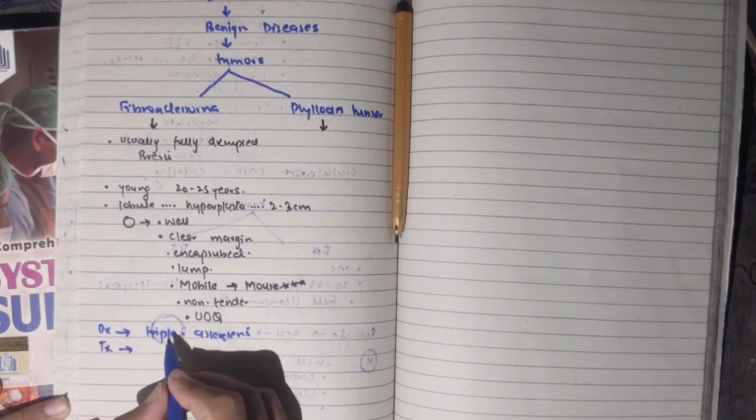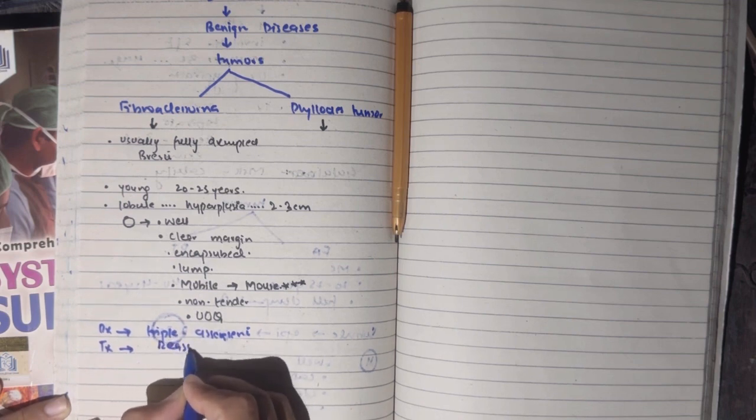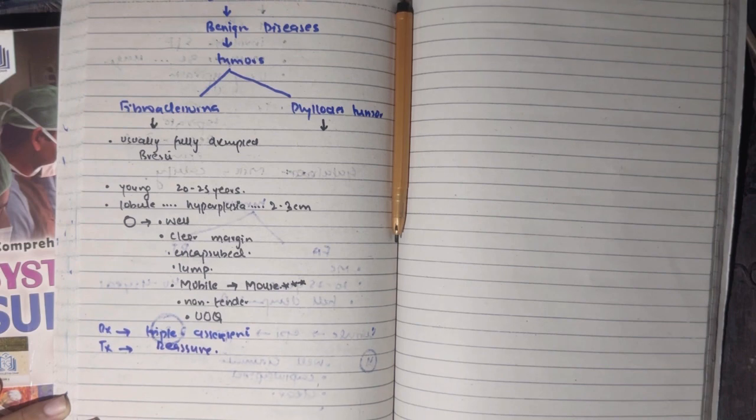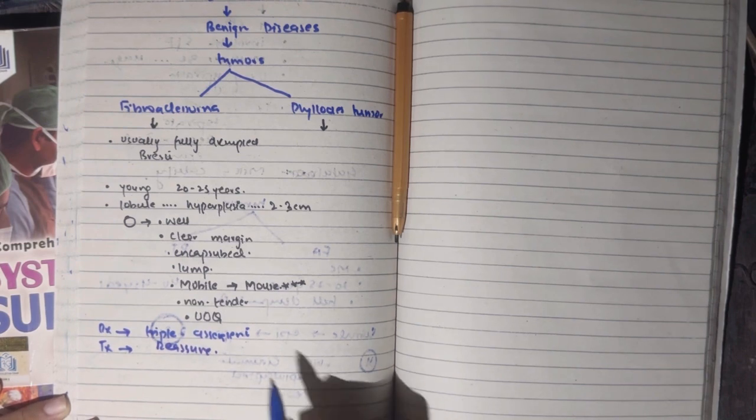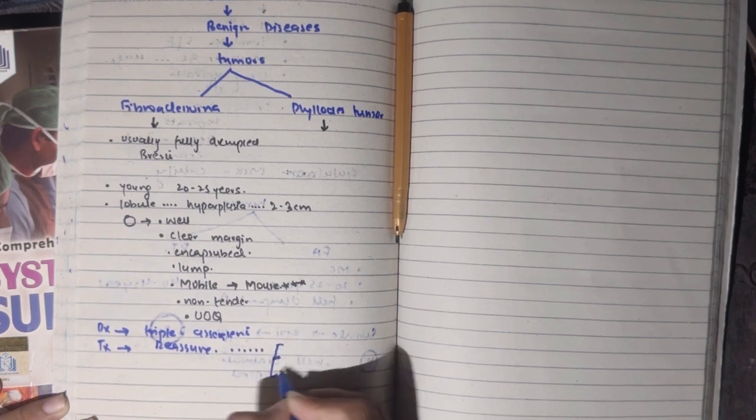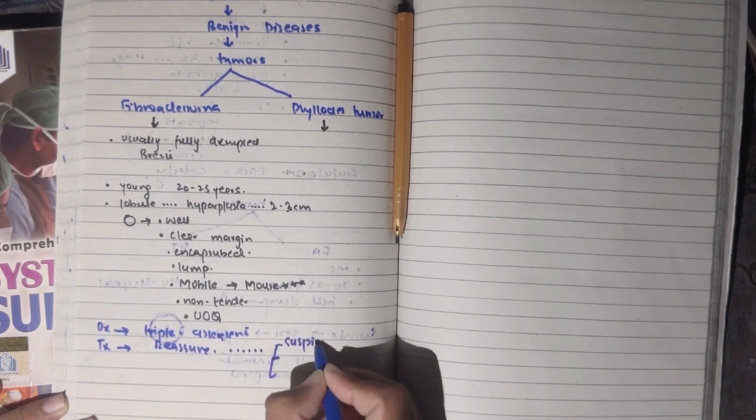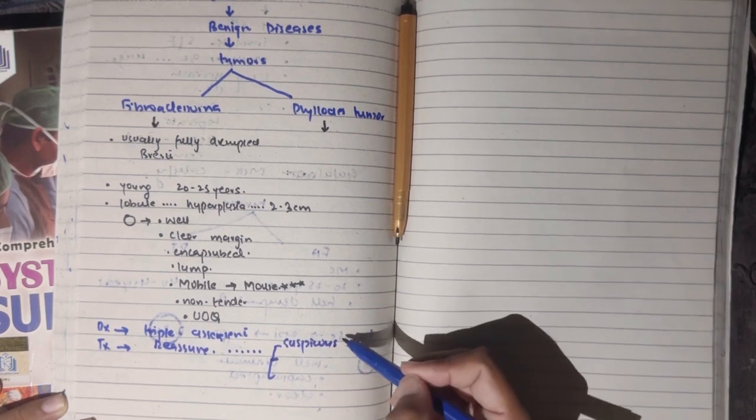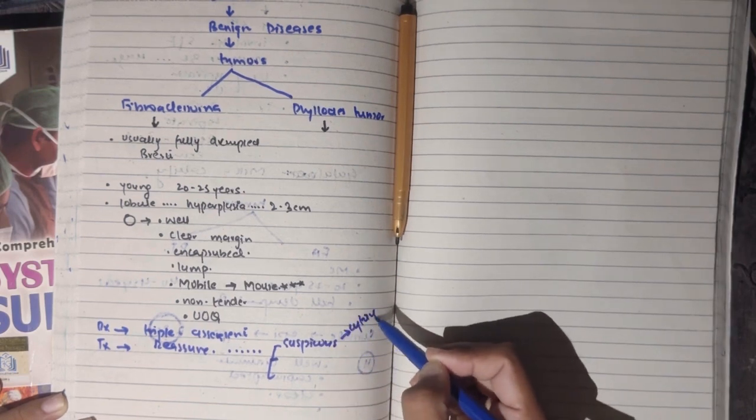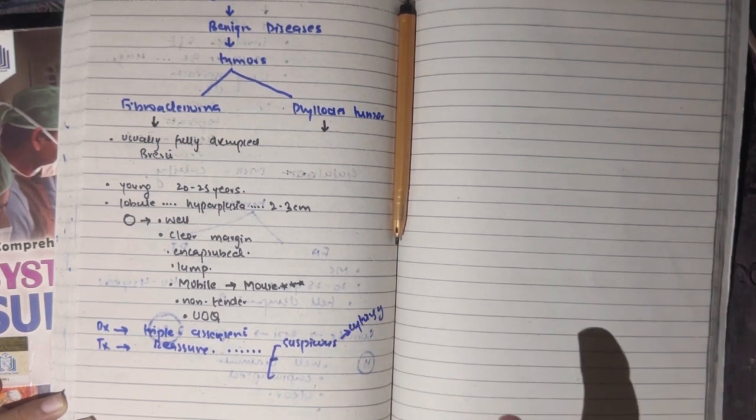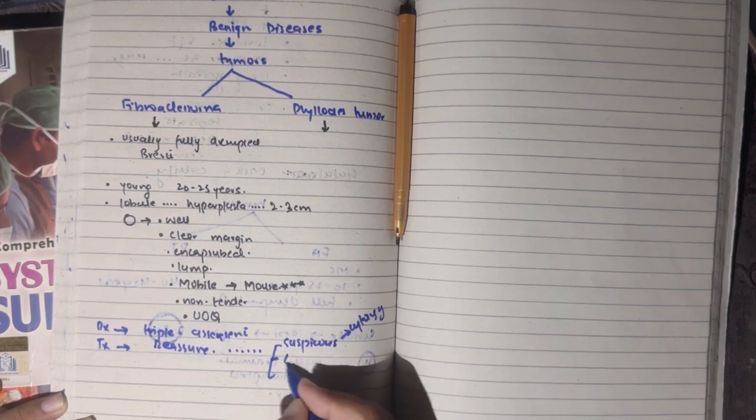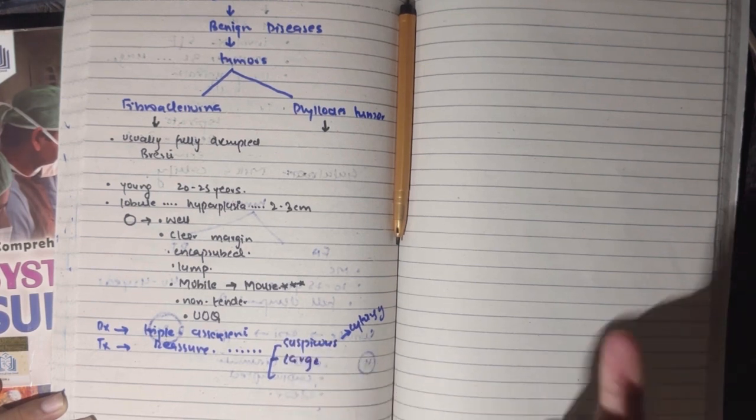Usually we don't need histopathological investigations, but if the clinician is unsure or the patient is very anxious, then you can confirm. For treatment, we mostly reassure patients because treatment is not necessary. But if there are some features, then you can do surgery - if it is very suspicious, if cytology is abnormal, if this lump is large, or the patient's desire is that this mobile lump is not acceptable.